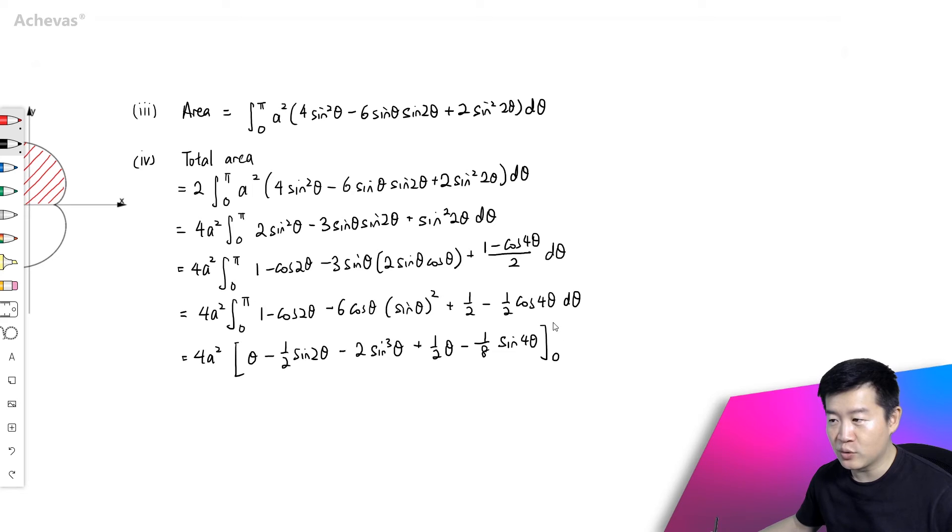We'll be substituting in 0 all the way until π. So this will be 4a². Substituting in π, it will be π minus sine 2π is 0, sine³π is 0, and this is going to be plus half π minus sine 4π is again 0.